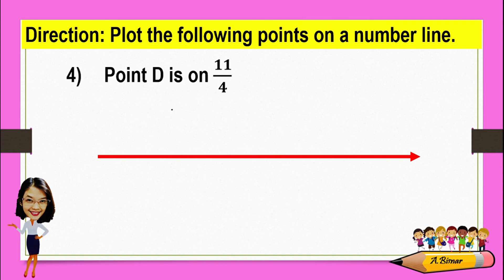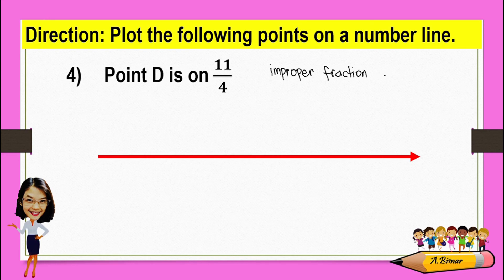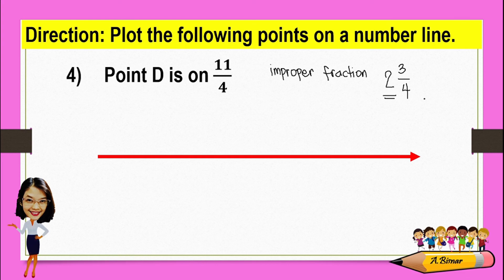Point D is on eleven-fourths. It's an improper fraction, so let us change this into mixed form. To change this into mixed fraction, we'll divide — how many fours are there in eleven? We have two, and the remainder is three. Which means eleven-fourths is equivalent to two and three-fourths. Now, observe that the whole number is two, which means this fraction is between two and three.